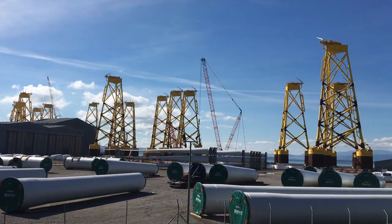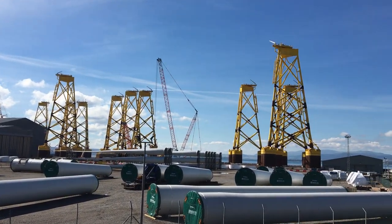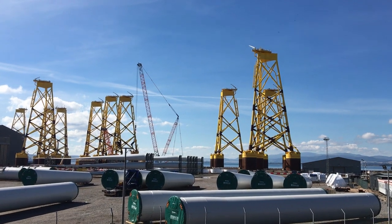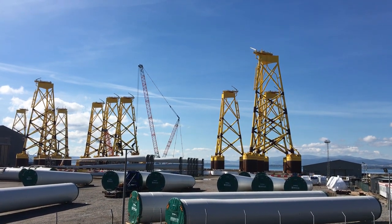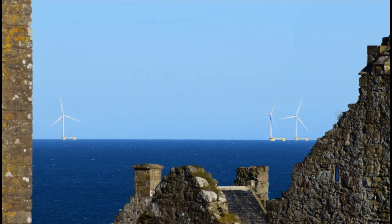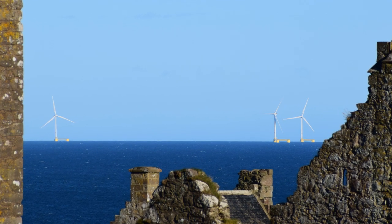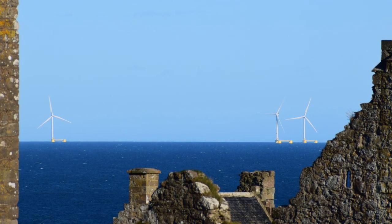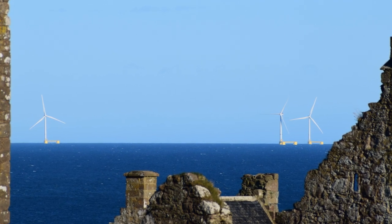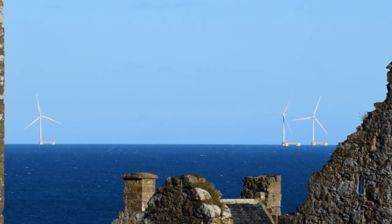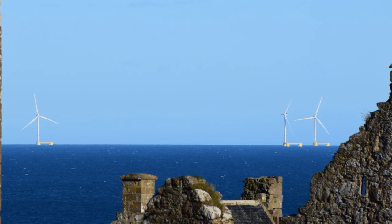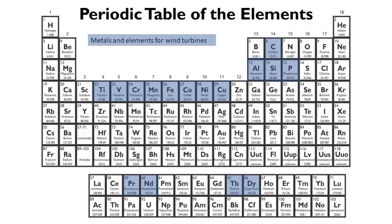An offshore wind farm uses a lot more copper than an onshore one. Where an onshore wind farm needs about three and a half tons of copper per megawatt, an offshore one needs almost three times that — about nine and a half tons per megawatt. So all sorts of metals are needed for wind turbines.